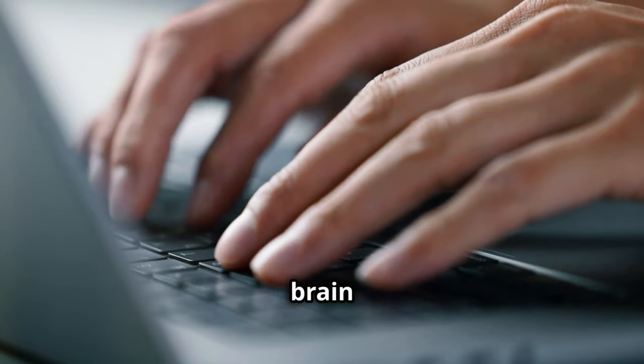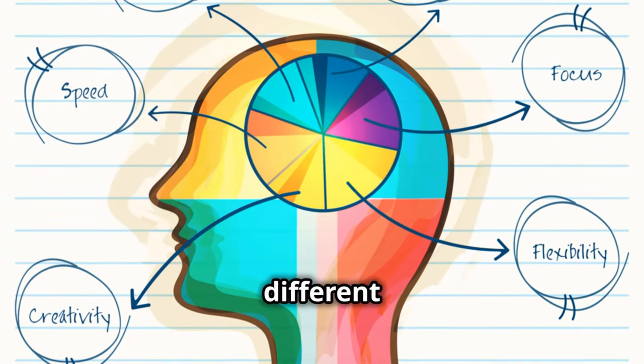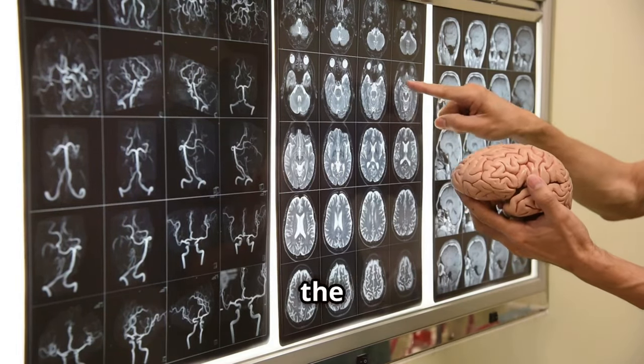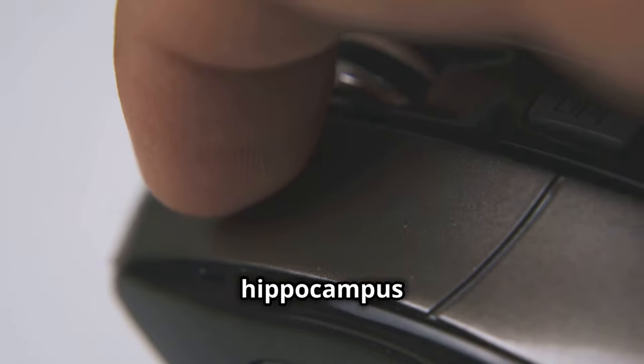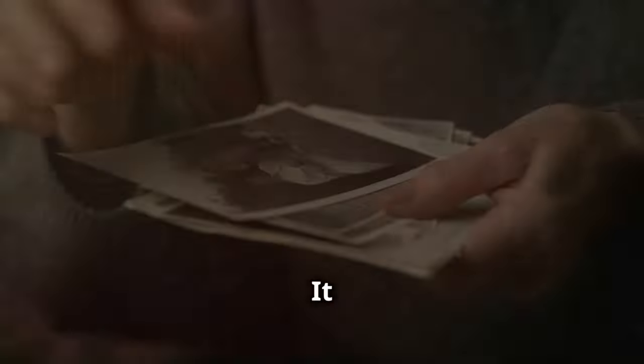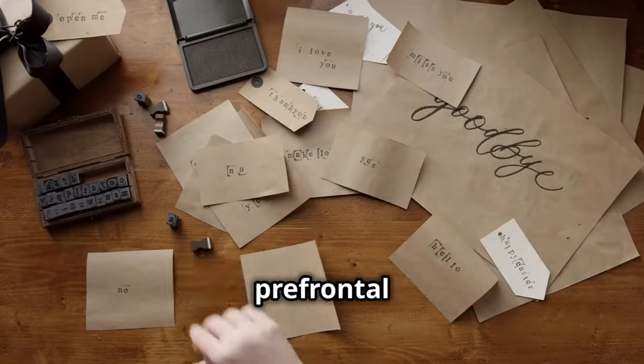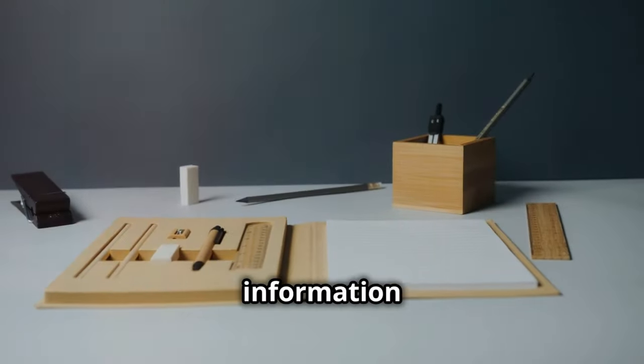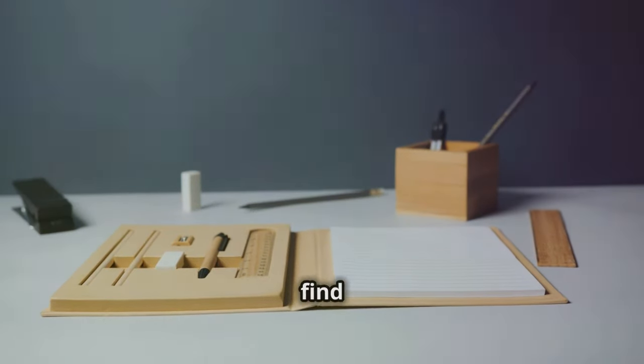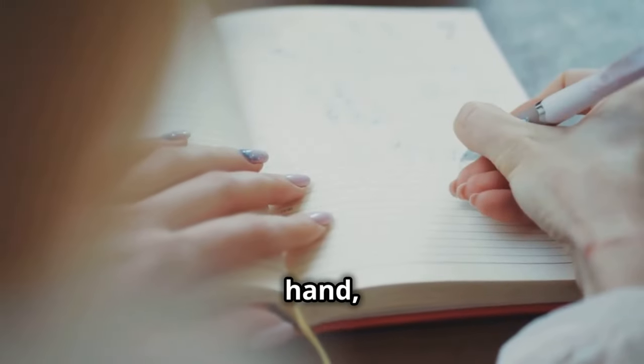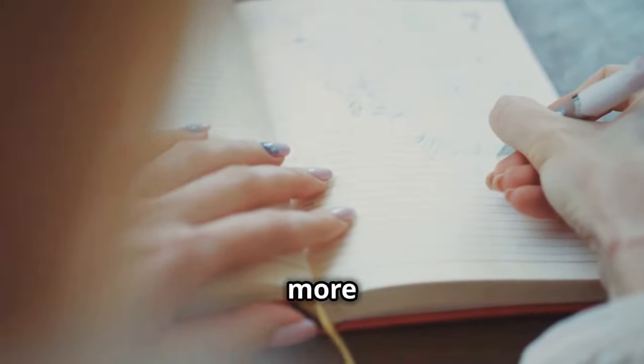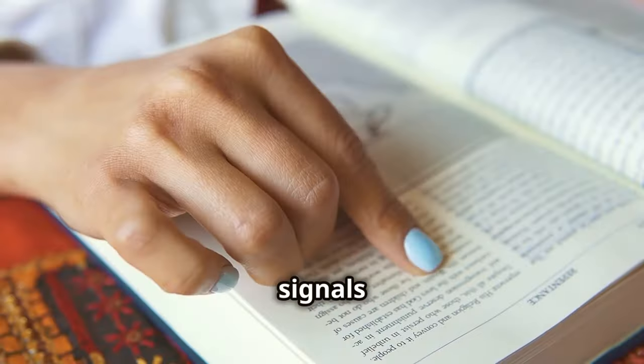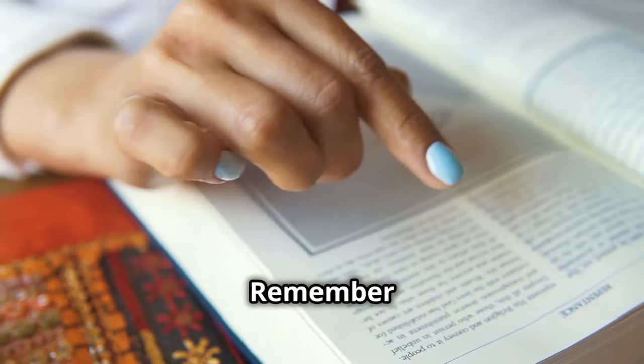Think of your brain like a powerful computer. It has different parts that do different jobs. Two parts are super important for memory: the hippocampus and the prefrontal cortex. The hippocampus is like the save button - it helps us form new memories. The prefrontal cortex is like the organized button - it helps us make sense of information and store it in a way that's easy to find later. When we take notes by hand, we activate both of these areas more strongly. The physical act of writing sends signals to our brains. These signals say, 'Hey, this is important, remember this.'